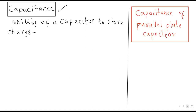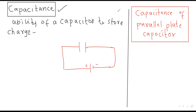Parallel plate capacitor میں دو metallic plates ہوتی ہیں جنہیں battery یا source کے ساتھ connect کرتے ہیں۔ Positive terminal اور negative terminal سے plates کو connect کیا جاتا ہے۔ یہ first اور second plate ہیں جنہیں ہم آگے detail میں discuss کریں گے۔